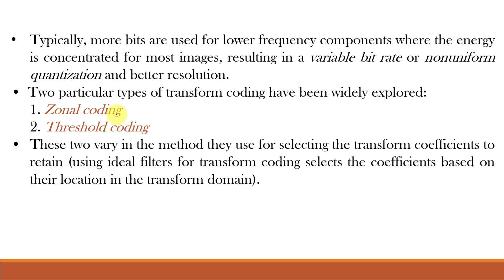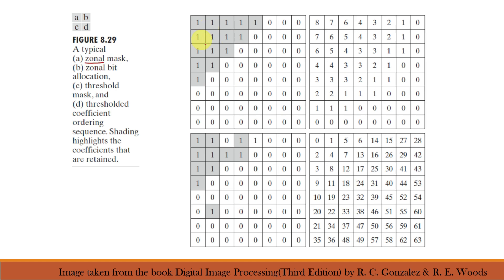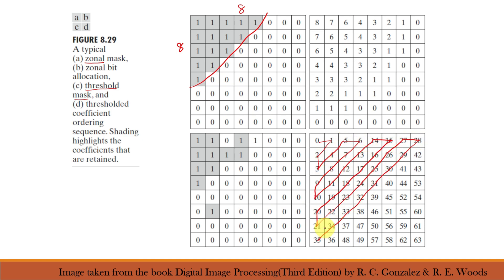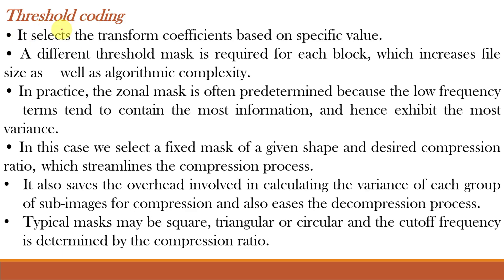There are two particular types of transform coding: zonal coding and threshold coding, which vary in the method used for selecting transform coefficients to retain. For zonal coding, a zonal mask is used — values within the zone are retained, and a zonal bit allocation assigns maximum bits toward that zone and fewer bits outside. This is for an 8×8 sub-image. For threshold coding, rather than using a zonal area, values above a particular threshold are retained. The threshold coefficient ordering sequence follows a zigzag manner.